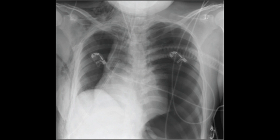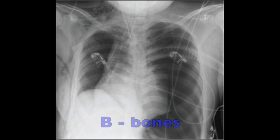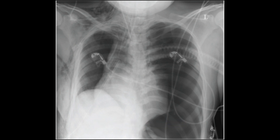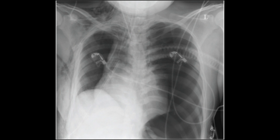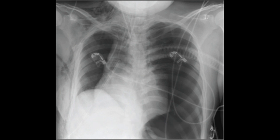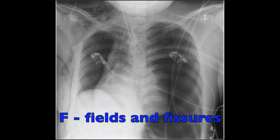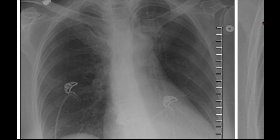This patient ended up having an acute tension pneumothorax following a cardiac operation after a pneumonectomy. The bones looked fine, no fractures. The heart is shifted to the right but otherwise within normal limits. The diaphragm on the left is pushed down, likely showing the deep sulcus sign, which is also indicative of a pneumothorax. There are no effusions visible, and the fields and fissures don't show any consolidations or congestion.